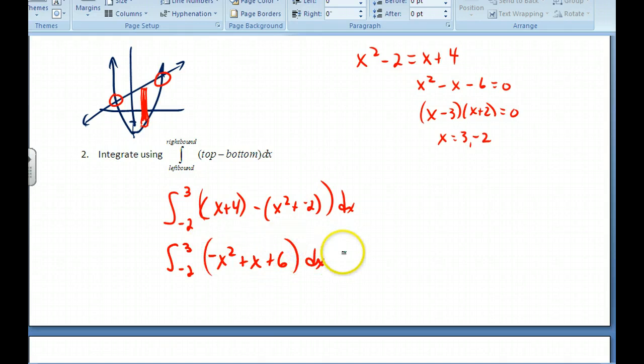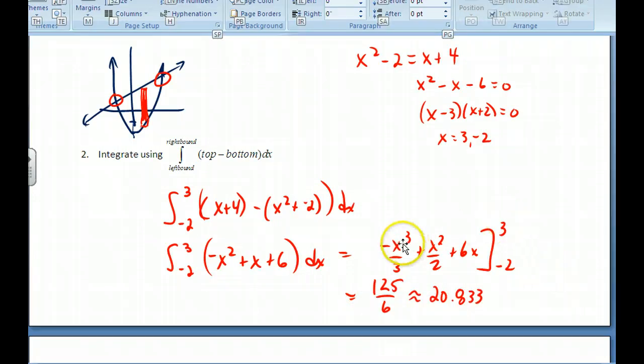We integrate this. And so we're going to get negative x cubed over 3 plus x squared over 2 plus 6x. And we're evaluating that from negative 2 to 3. You go ahead and figure that out. So plugging in the 3 here and then plugging in the negative 2 and subtracting the 2, you'd end up with that answer there. Moving on.